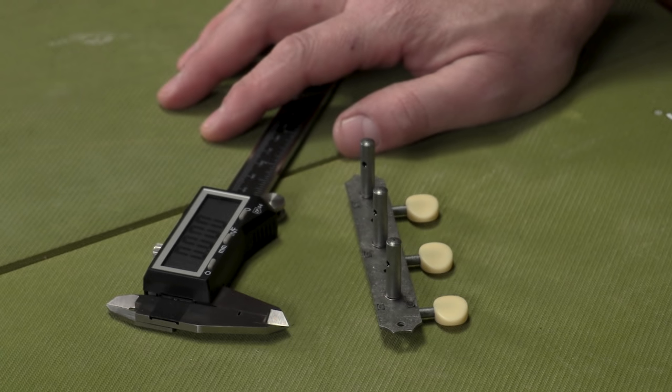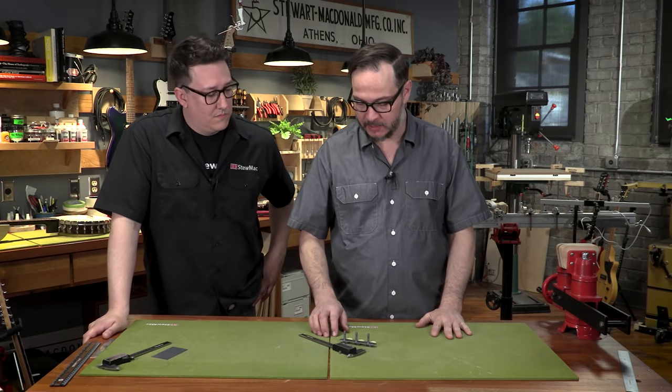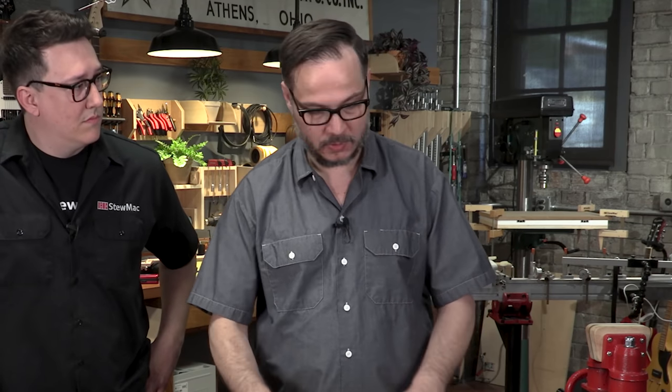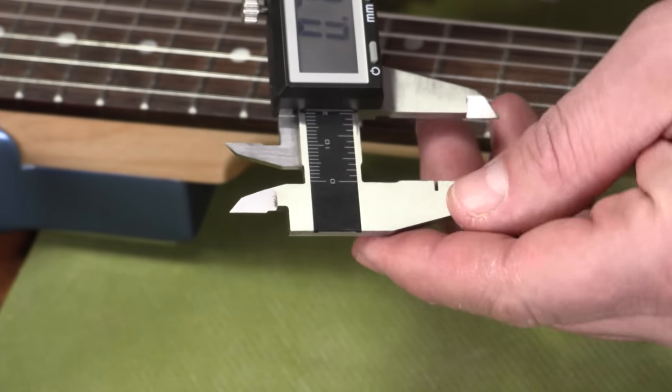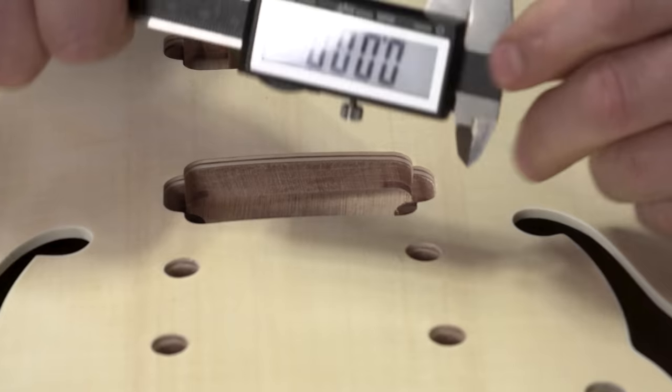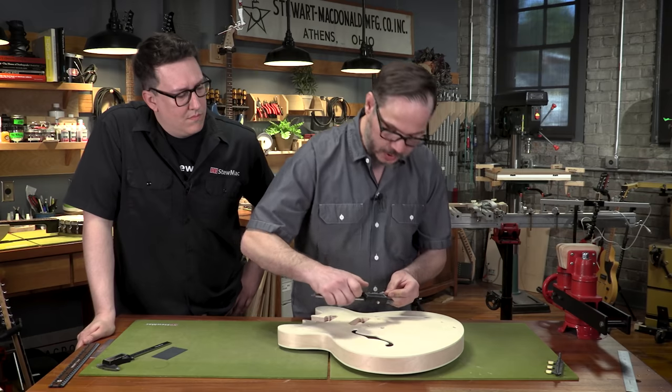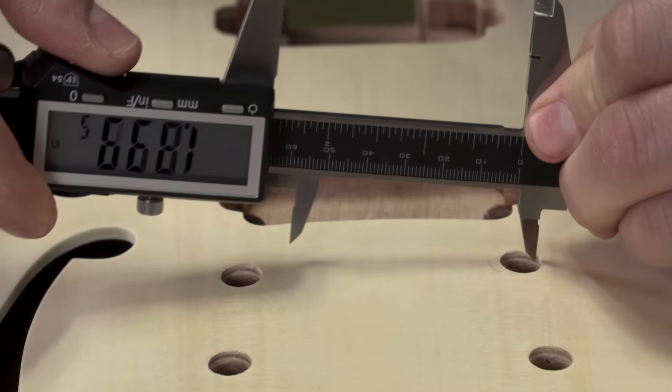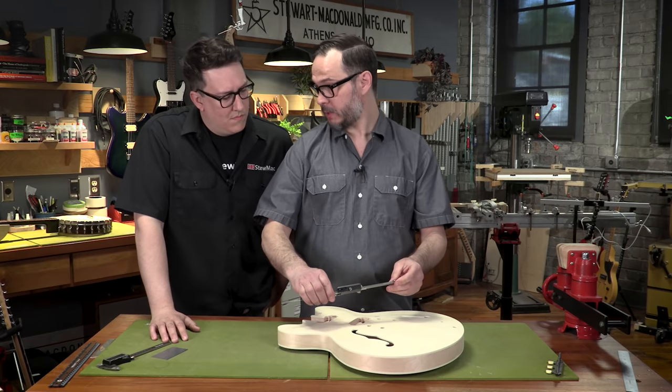But what if you want to measure the spacing between two holes instead of two posts? That's a good question. It's basically the same thing. We're talking about the difference between outside diameter and inside diameter. A good example would be tune-o-matic post spacing. So let's check that out. All right. So I'm going to do the same thing here, but I'm going to use the smaller jaws on the other side of the caliper. I'm going to measure the diameter of one of the holes. I'm going to zero that out. And then I'm going to measure the outside of both of those holes. 2.909.